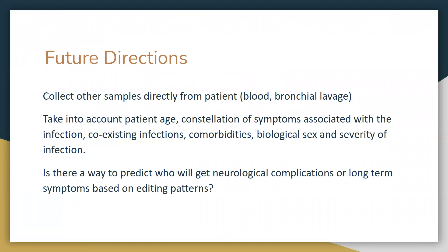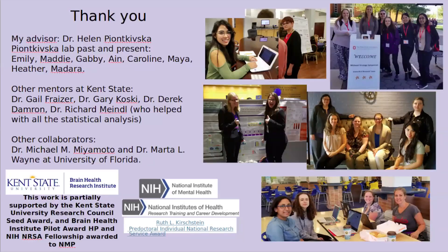Though the study is limited by the use of cell lines and quality and depth of coverage of sequencing data, we were still able to detect changes in editing patterns. In the future, we would like to use samples directly from patients, like blood or bronchial lavage, while also obtaining age, biological sex, and other phenotypic information. We will then combine this with machine learning models to better predict diagnostic, prognostic, and therapeutic biomarkers. Additionally, we would like to look at editing in the brain during and post infection status to explore mechanisms of neurological symptoms. I would like to thank everyone in my lab and collaborators and other professors at Kent State, and all of the funding sources shown here.